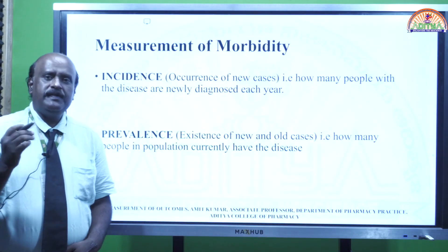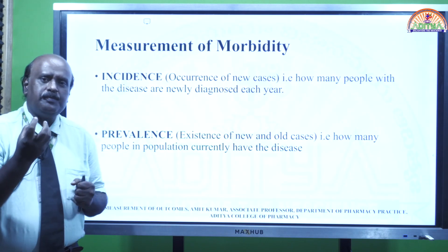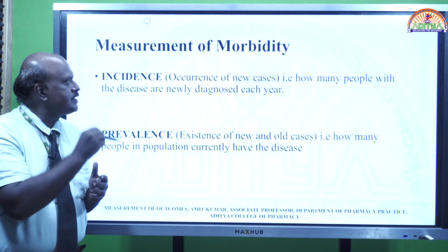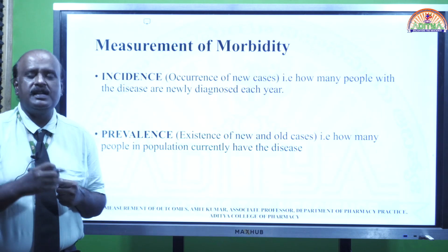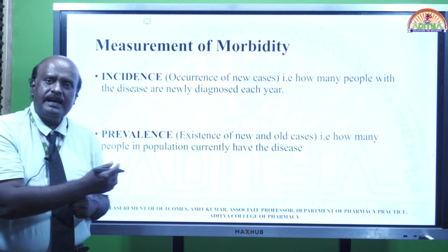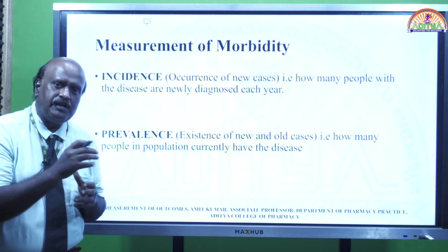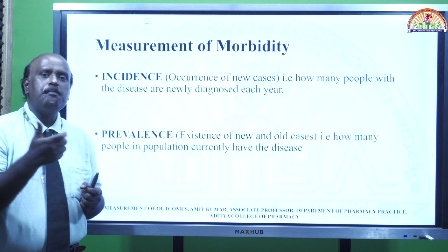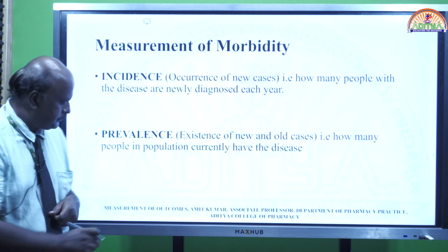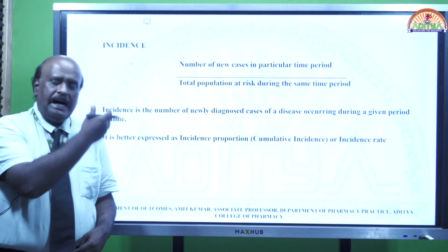Morbidity can be measured in two different ways. First is incidence and the second is prevalence. Incidence basically means the occurrence of new cases in a population. Prevalence, on the other hand, is the total number of cases in the population, which accounts for both old cases and also the new cases — it is a sum of new cases plus old cases.